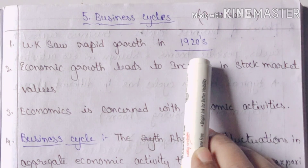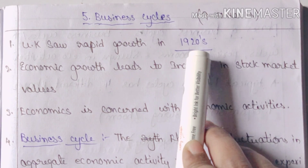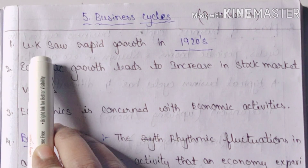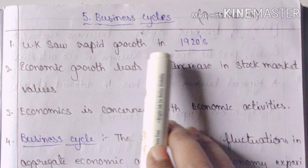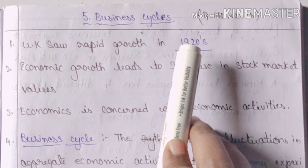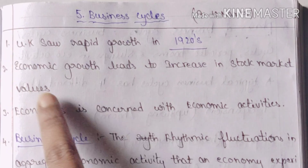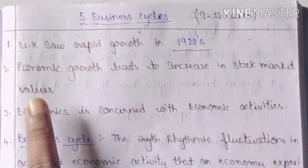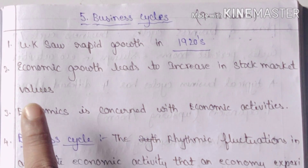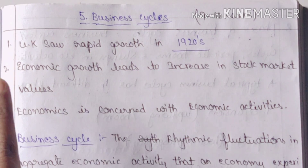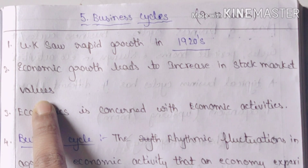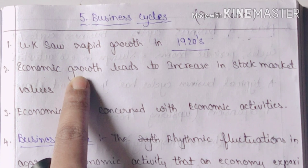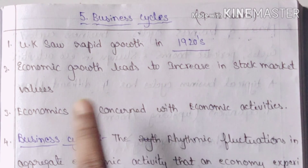The first point is, the UK saw rapid growth in 1920. UK had the highest growth. The second point is, economic growth leads to an increase in stock market values. The stock exchange share value increases when the economy grows.